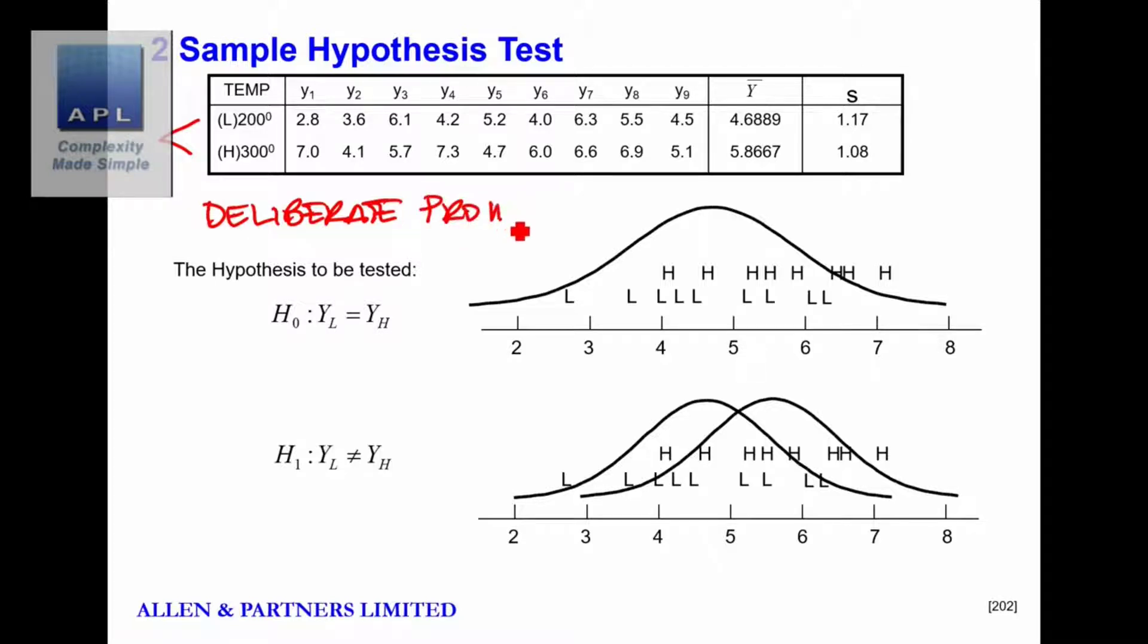process change, a deliberate process change. And you don't want to be using this for any other reason really. In other words, in this case, some engineer has decided that maybe a low temperature might produce a different result to a high temperature.